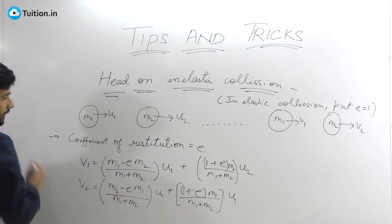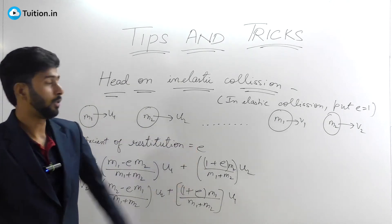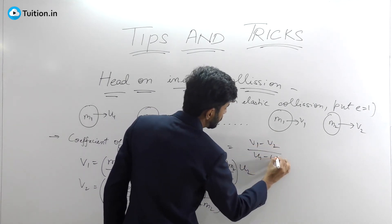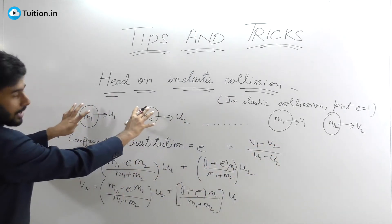What do you mean by coefficient of restitution? That will be given to you as E, and that's according to this formula: (V1 - V2) / (U1 - U2). What's happening here is both of these bodies collide.